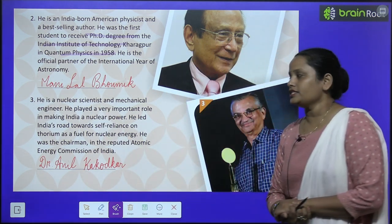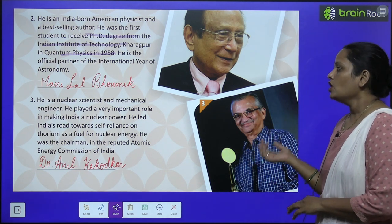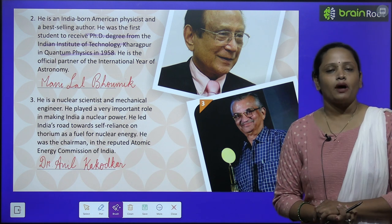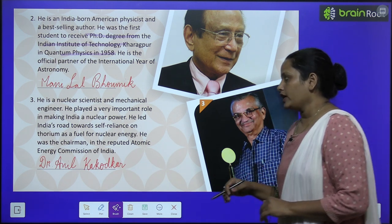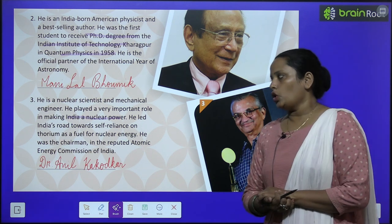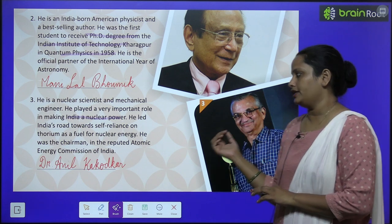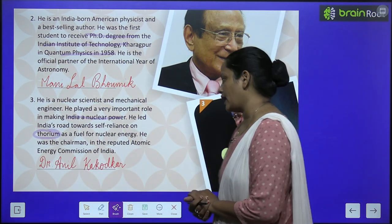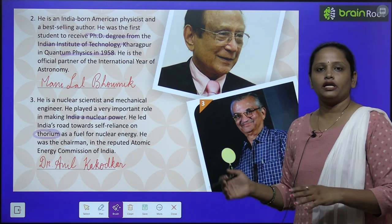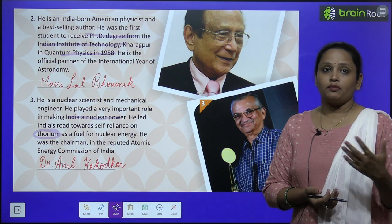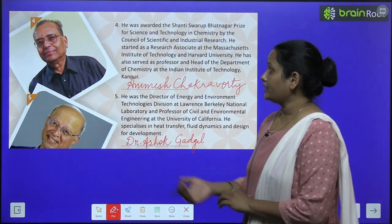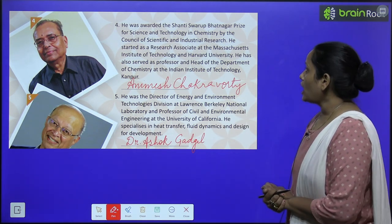The third scientist is a nuclear scientist and mechanical engineer. He played a very important role in making India a nuclear power. He led India's road towards self-reliance on thorium as a fuel for nuclear energy. He was the chairman of the Atomic Energy Commission of India. He is Dr. Anil Kakodkar.